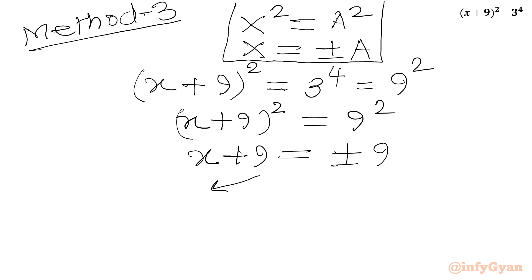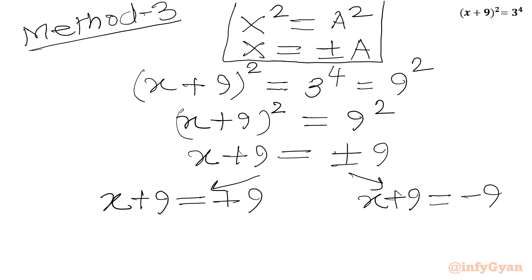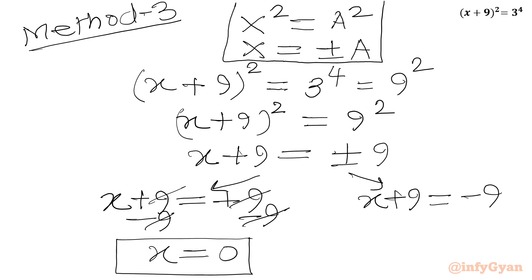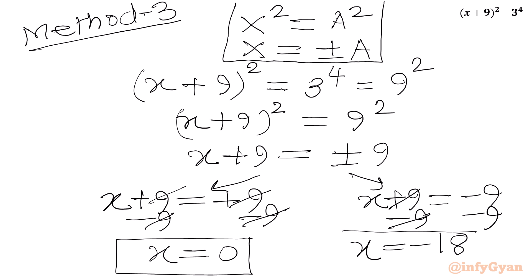So we can write two equations. First equation: x + 9 = +9, and second equation: x + 9 = -9. Subtracting 9 from both sides of the first equation, we get our first root x = 0. From the second equation, subtracting 9 from both sides, we get x = -18. This is our second solution, and this was Method 3.